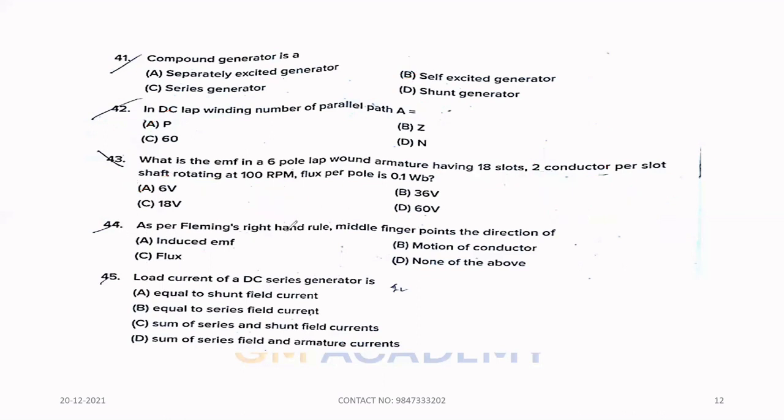Forty-four. As per Fleming's right-hand rule, middle finger points the direction of. Option A, Induced EMF. In the generator, the middle finger indicates current direction.